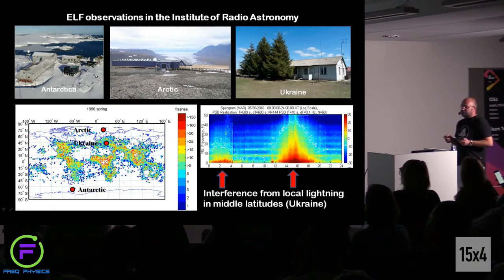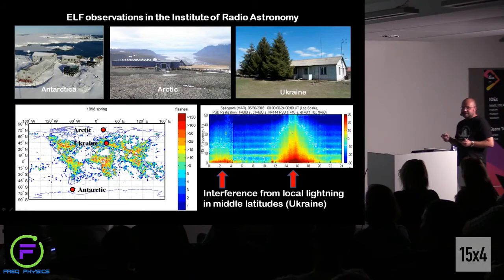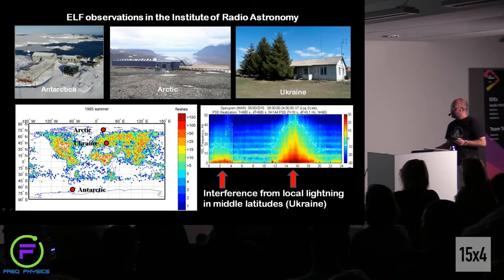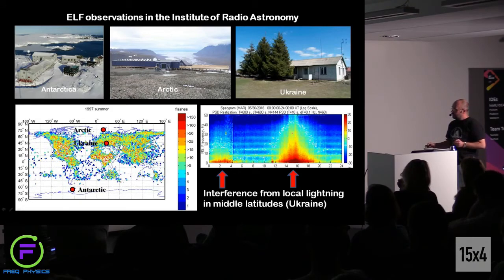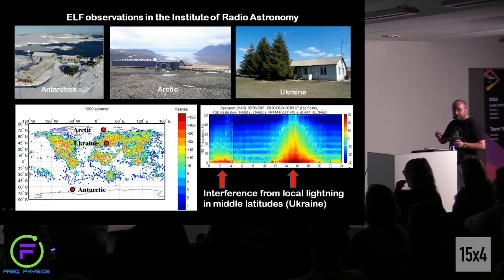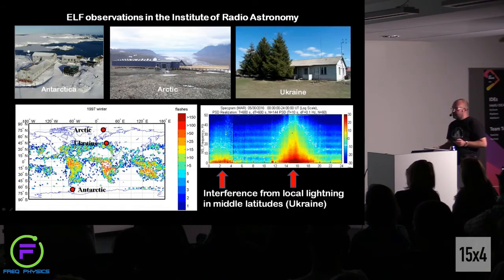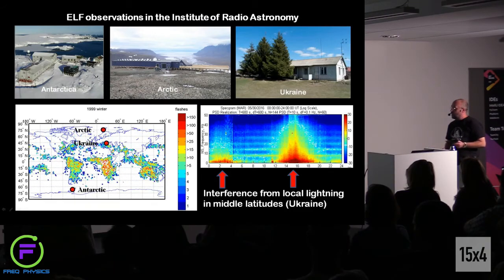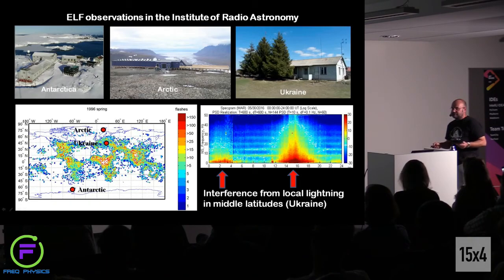There are two things that can destroy the Schumann resonance picture. The first is local lightning, which produces very strong electromagnetic pulses that destroy the resonance structure — you can see this in a spectrogram taken in Ukraine, where very large signals obscure the resonance. The previous picture showed the resonance from Antarctica with no interference signals. So the best place for observation is a polar region. Another advantage of polar regions is the absence of artificial noise, so our Antarctic records have very good quality and can be used for different scientific tasks.